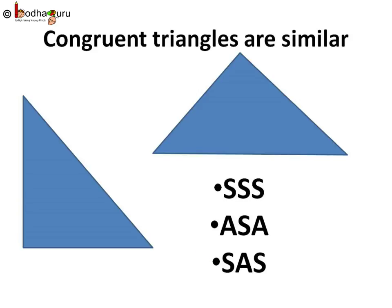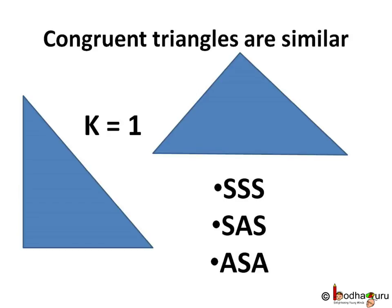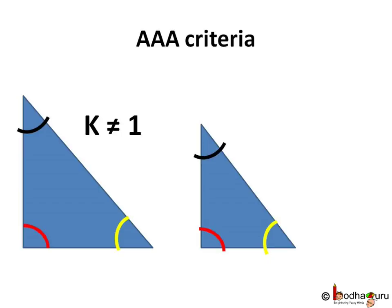In case of congruency, K, that is the scale factor, is equal to 1, as both triangles are equal in all aspects: shape, size, everything equal means similar. So congruent triangles are similar.